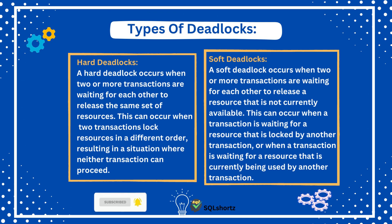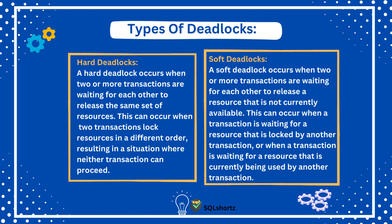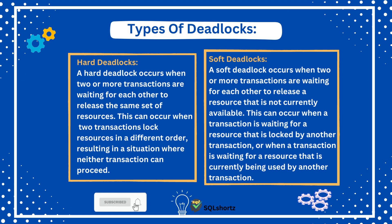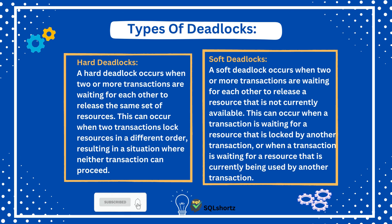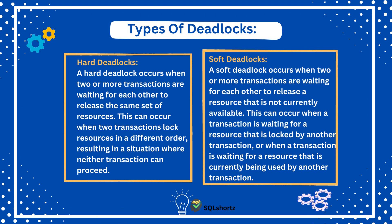The second one is soft deadlocks. A soft deadlock occurs when two or more transactions are waiting for each other to release a resource that is not currently available. This can occur when a transaction is waiting for a resource that is locked by another transaction, or when a transaction is waiting for a resource that is currently being used by another transaction.